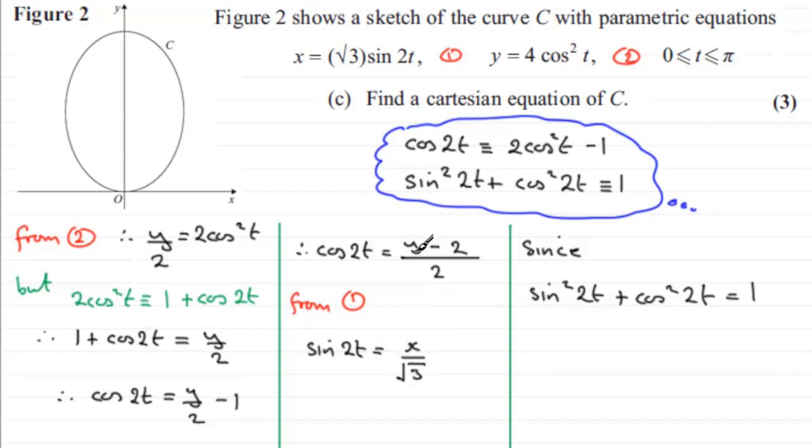I can say that therefore, if I square sine 2t, that's going to be x squared over 3. So we have therefore x squared over 3 plus—now if I square cos 2t, we're going to square the top here and square the bottom—so that's going to be y minus 2 all squared, and that's going to be over 2 squared which is 4, and that's going to equal 1.